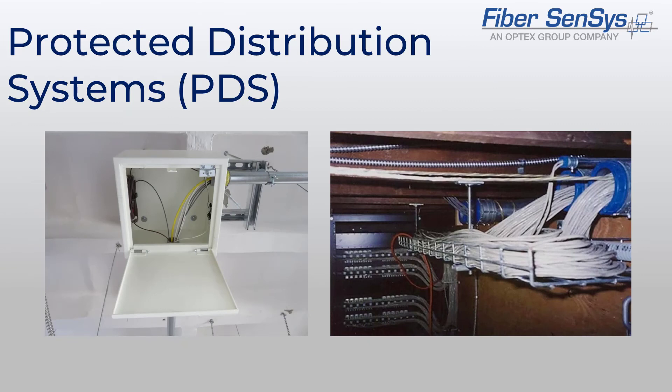Perimeter security has always been and will continue to be a critically important aspect of site security. However, some facilities require additional security monitoring of their physical data network infrastructure — this is where the FiberSensys SecureLAN product line is utilized. SecureLAN products have been employed successfully in many different protected distribution system structures such as EMT, rigid metal conduit, ducts, and raceways, to help protect data networks. The SecureLAN product line was developed with the specific goal of making securing network lines easier.